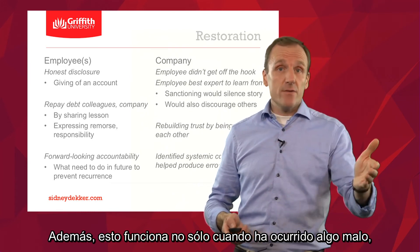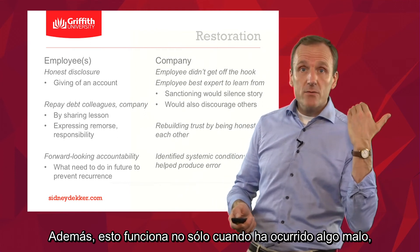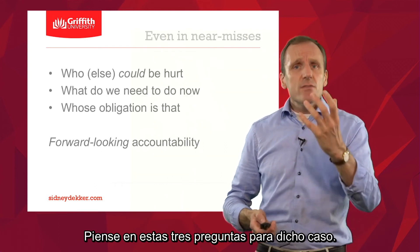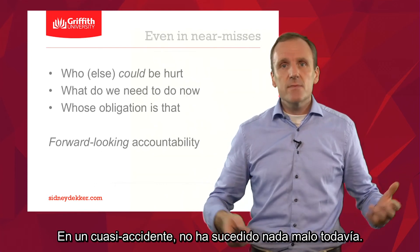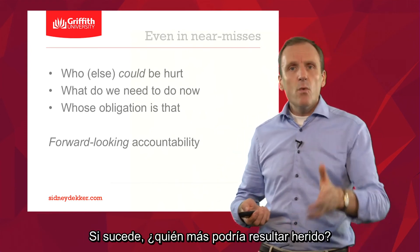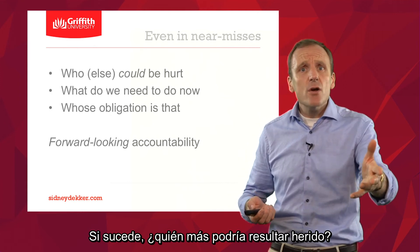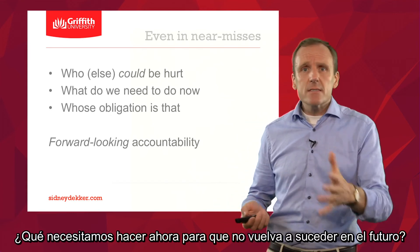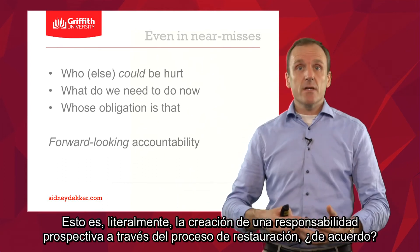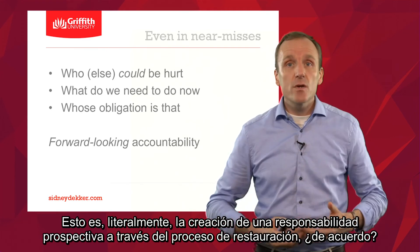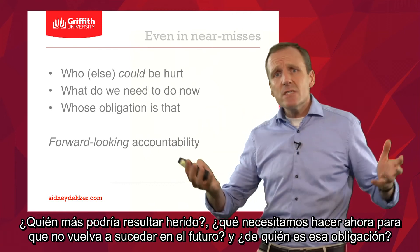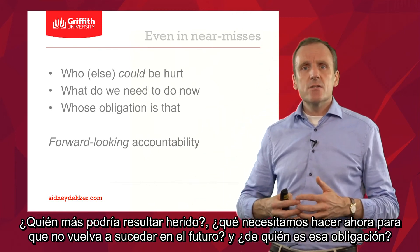This works not only when something bad has already happened, but also with a near miss — an indication that something bad may happen. Think about these three questions in that case. Nothing bad has happened yet, but this is the conversation to have: 'Whoa! If this happens, who else could get hurt? What do we need to do now so that that doesn't happen? And whose obligation is it to do that?' That literally is the creation of forward-looking accountability through a restorative process. See if you can get yourself to engage in that sort of forward-looking accountability in your own organization.